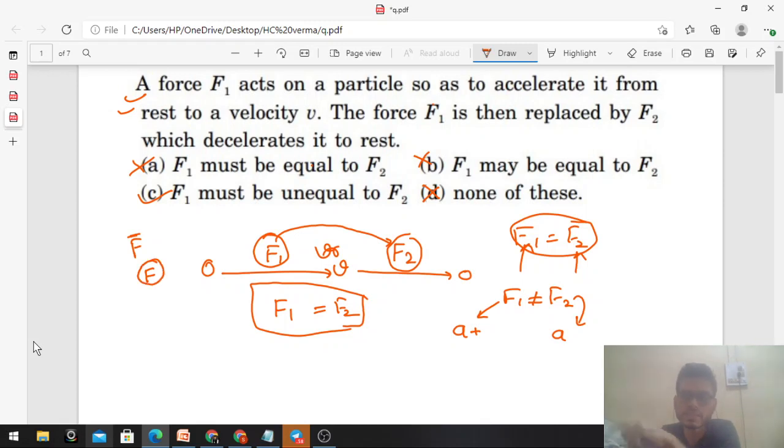The denotation F represents the magnitude of the force. So agar usne F jo likha hua hai that represents the magnitude, tab aapka answer change ho jayega aur kuch jagah par aapko wo answer bhi mil jaega. So actually agar hum is case mein F1 or F2 ko as a magnitude treat karein, so phir hamara answer change ho jayega. Chalo ab ek case lete hain jahan par hum F1 or F2 ko as a magnitude treat karte hain, tab solve karte hain.